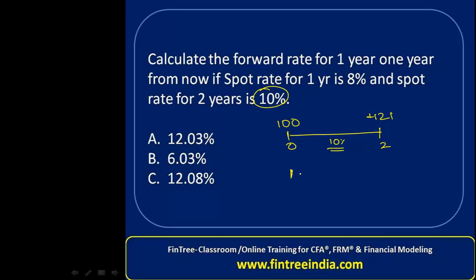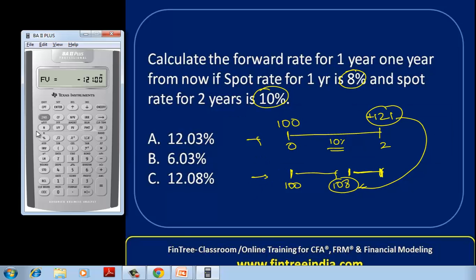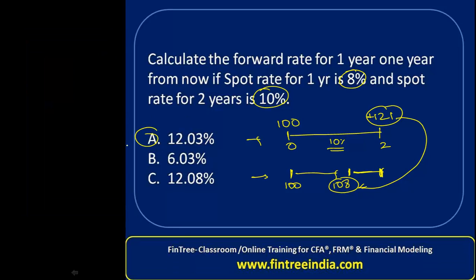Now, if you invest 100 for one year at 8%, by the end of the first year you have 108. The one-year forward rate one year from now is the rate at which you invest 108 for one year so that it grows to 121, matching the same future value. Using the TI calculator: PV = -108, FV = 121, N = 1, compute I/Y — this gives 12.04%, which is closest to option A.